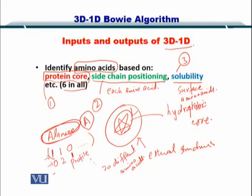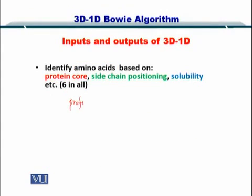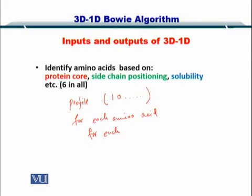So one amino acid can have multiple profiles. The key take-home message is that you create a profile — that is, 1s and 0s — for each amino acid for each instance in a protein structure, resulting in multiple profiles per amino acid.